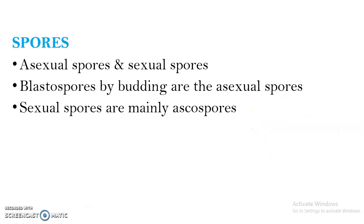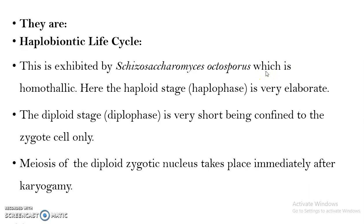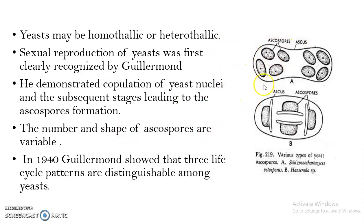Asexual spores are blastospores, formed by budding. Sexual spores are ascospores, which are formed in an ascus. Yeast may be homothallic or heterothallic in nature. Sexual reproduction in yeast was first recognized by Guillermont, who demonstrated the copulation of yeast nuclei and the subsequent stages leading to formation of ascospores. The number and shape of ascospores are variable. For example, Schizosaccharomyces has an ascus containing eight ascospores, while another yeast has only four ascospores of a different shape — hat-shaped. In 1940, Guillermont showed that three life cycle patterns are distinguishable among yeasts.